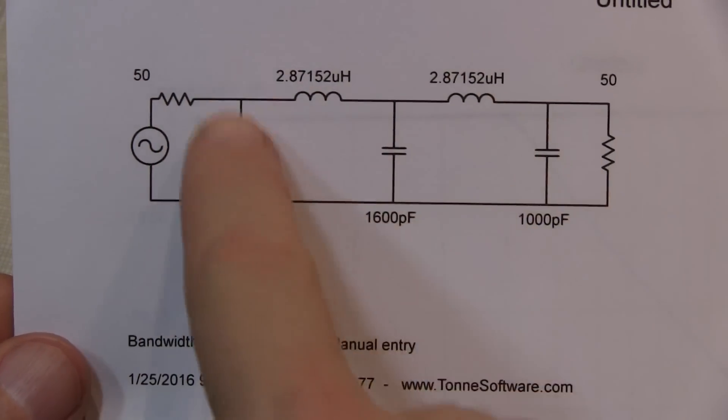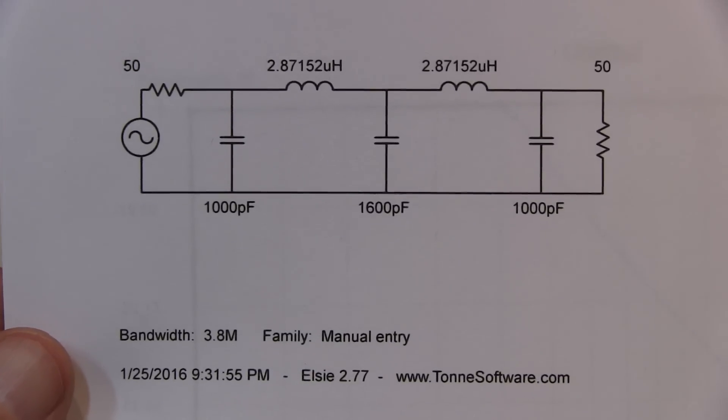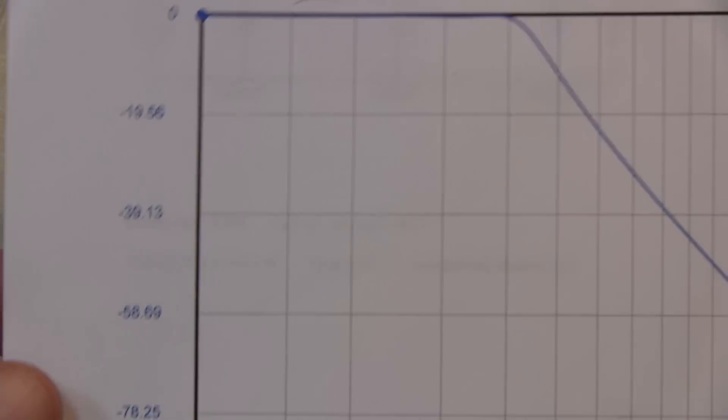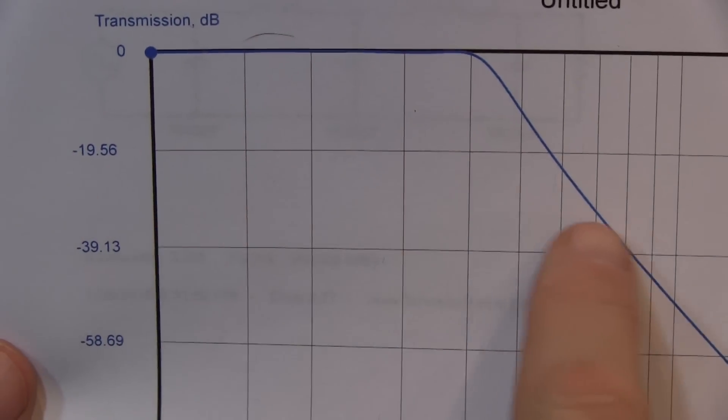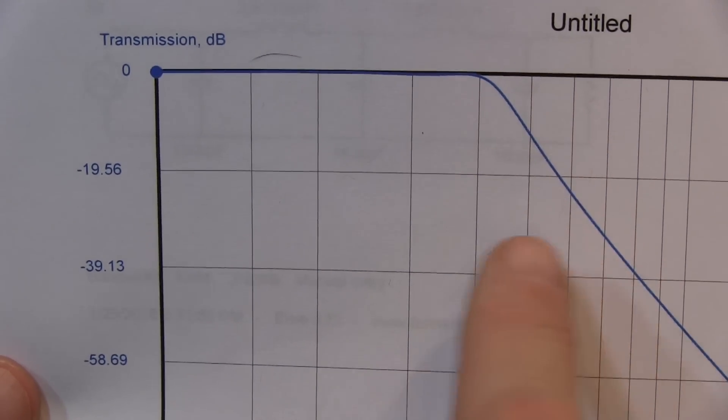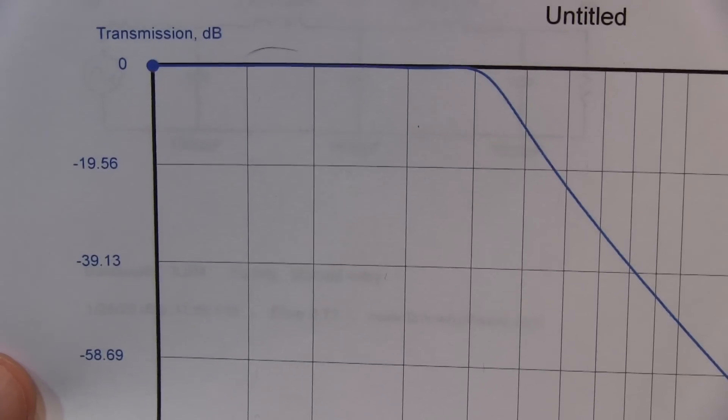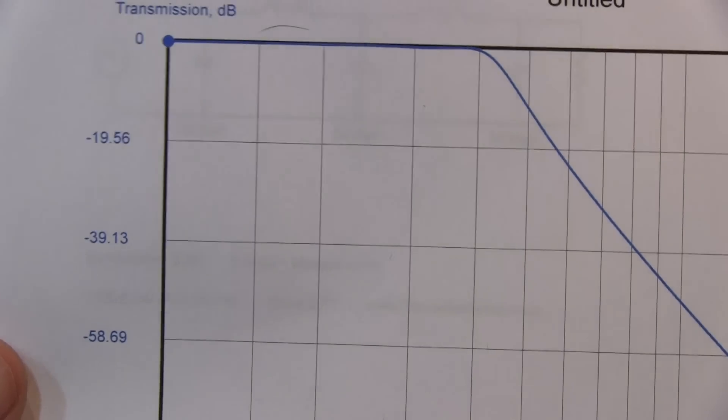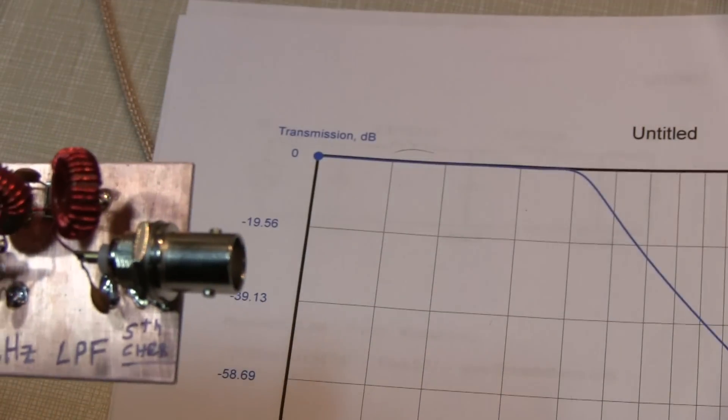This is the schematic that ELSIE provided for me, and then running a simulation on that in the same software, this is the result. And it said that it'd be somewhere between 25 and 30 dB down at the second harmonic of 3.57 MHz. So, let's take a look at it on the spectrum analyzer with a tracking generator to see how close that curve looks.